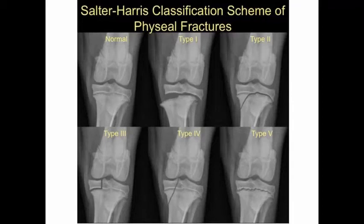These are pictures of different types of Salter-Harris fractures in the proximal tibia. The first picture is the normal X-ray, and the rest show different types from Type 1 to Type 5 of proximal tibial fractures.